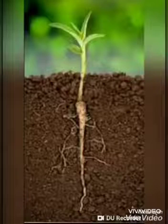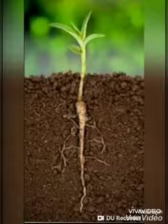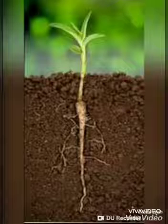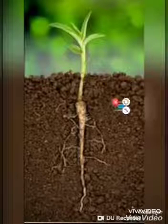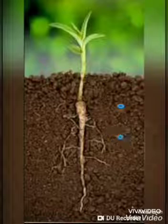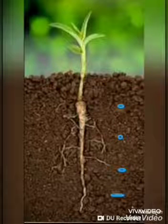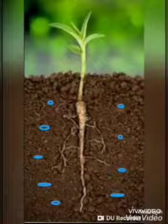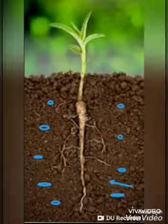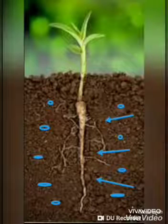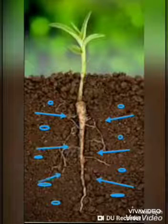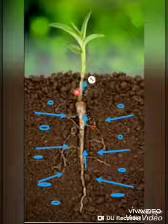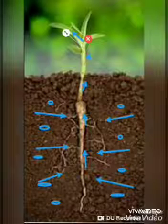Children, why does a root grow under the soil? It is because soil contains water and minerals. The function of the root is to absorb water from the soil along with minerals and supply it to the different parts of the plant.